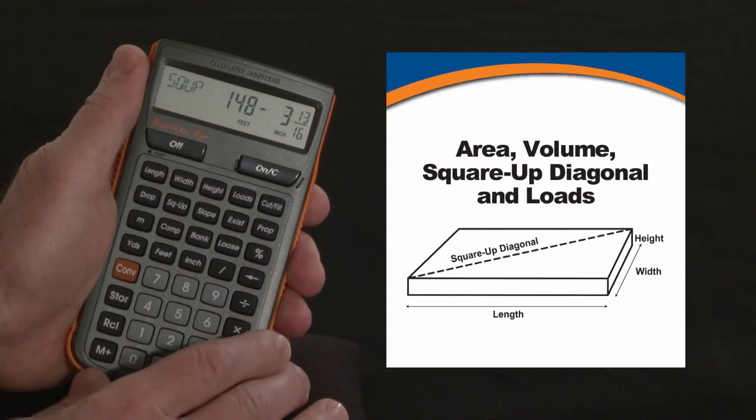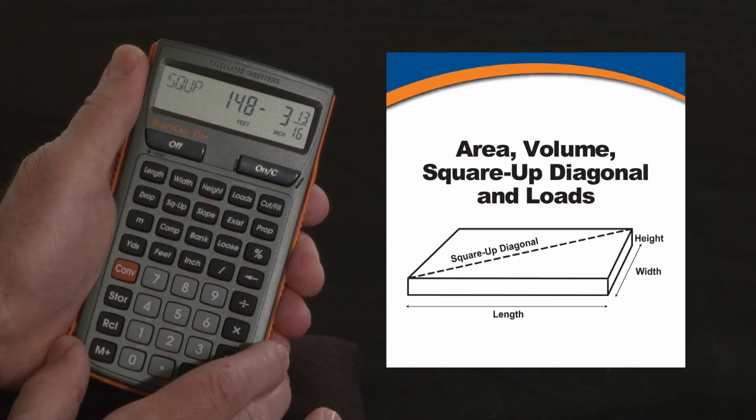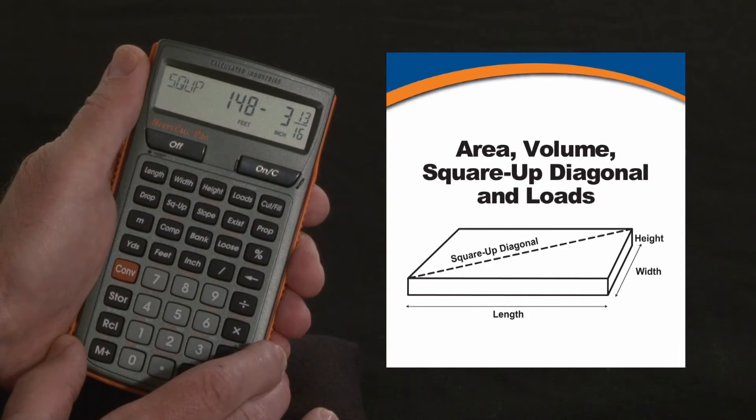Press it again. There's the square up diagonal, so if you were going to set forms and make sure you had 90 degree corners, that would be the number you would want to see pulled from both directions.